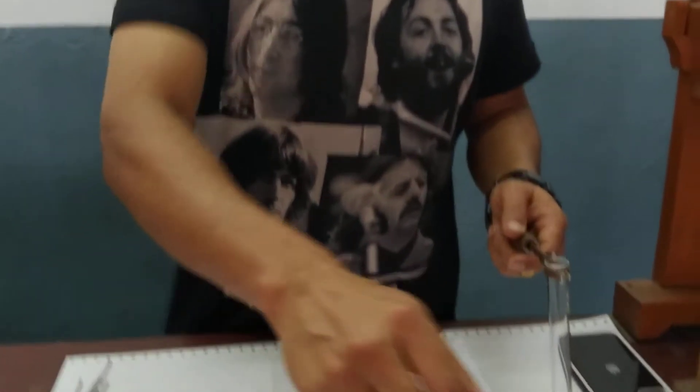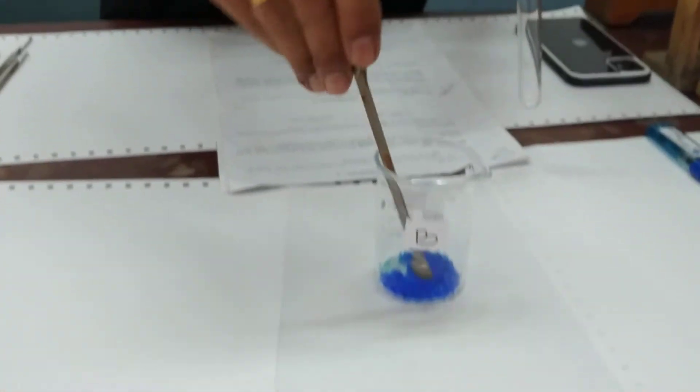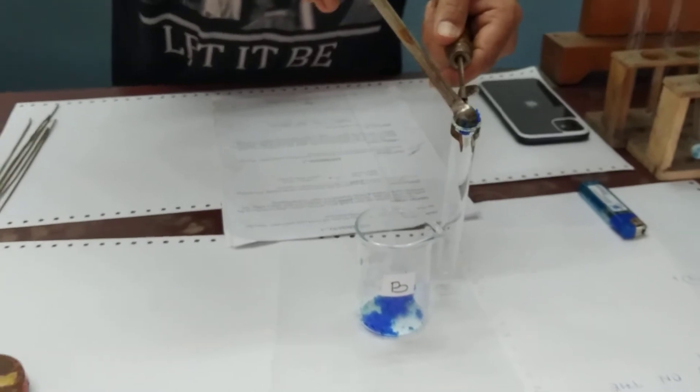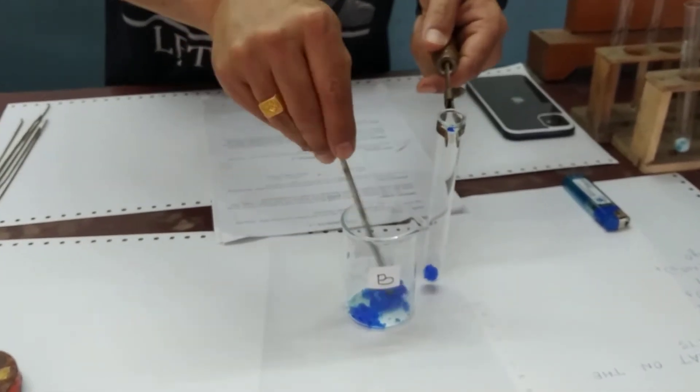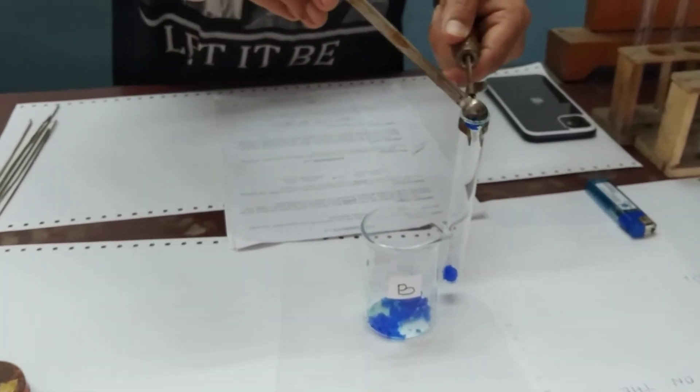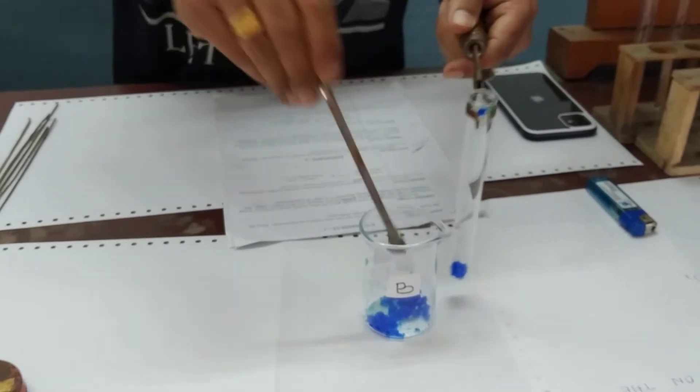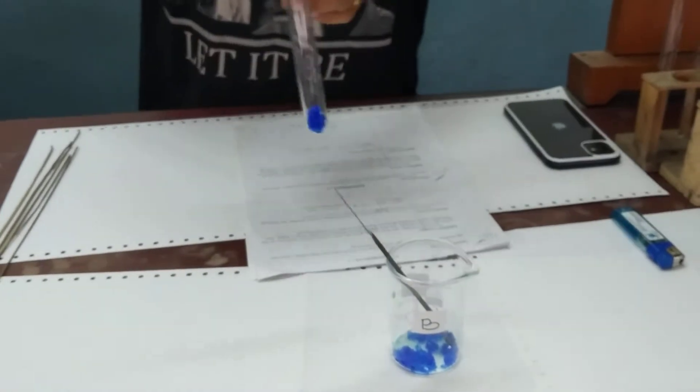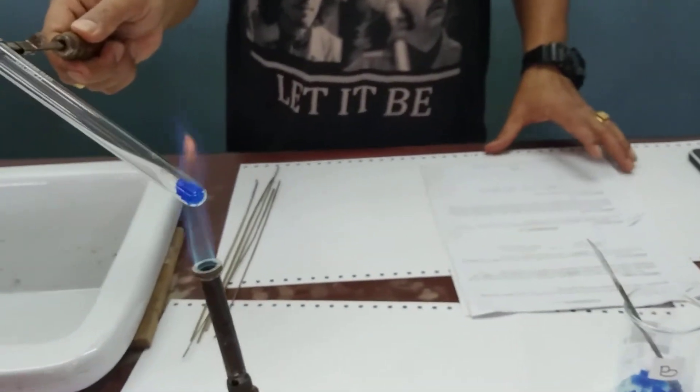Now we move on to experiment number two. We take sample B, a blue crystalline solid. It has absorbed a little moisture and become slightly sticky. We put it in a test tube.